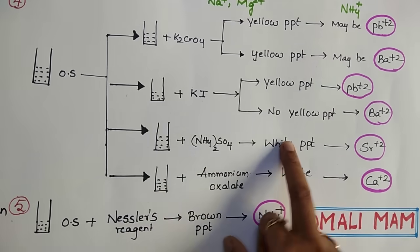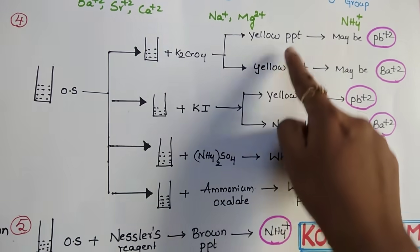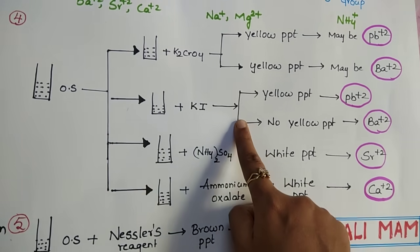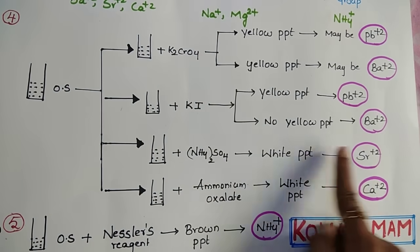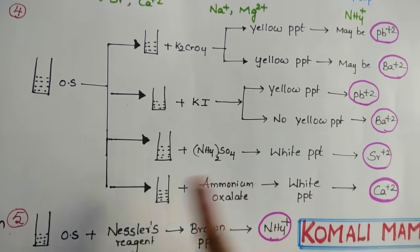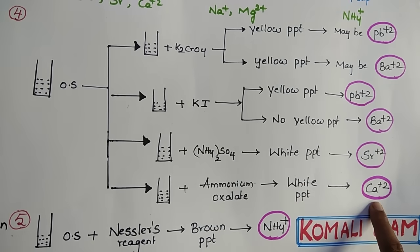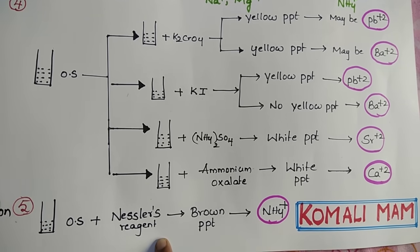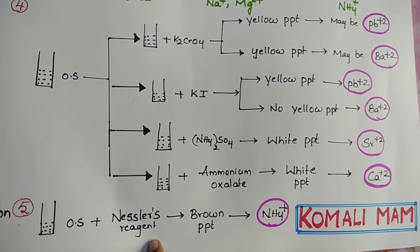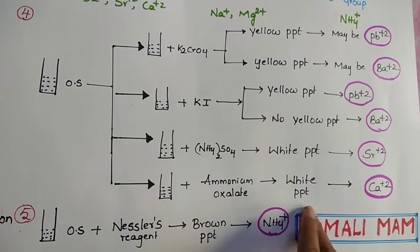Add ammonium sulfate to the original solution — if white precipitate forms, strontium (Sr²⁺) is present. If not, add ammonium oxalate — if white precipitate forms, calcium (Ca²⁺) is present. If not, take one more test tube and add Nessler's reagent in the presence of dilute HCl — if brown precipitate forms, ammonium ion (NH₄⁺) is present. Using very few reagents we can find both the cation and anion, and these simple tips make salt identification very easy.